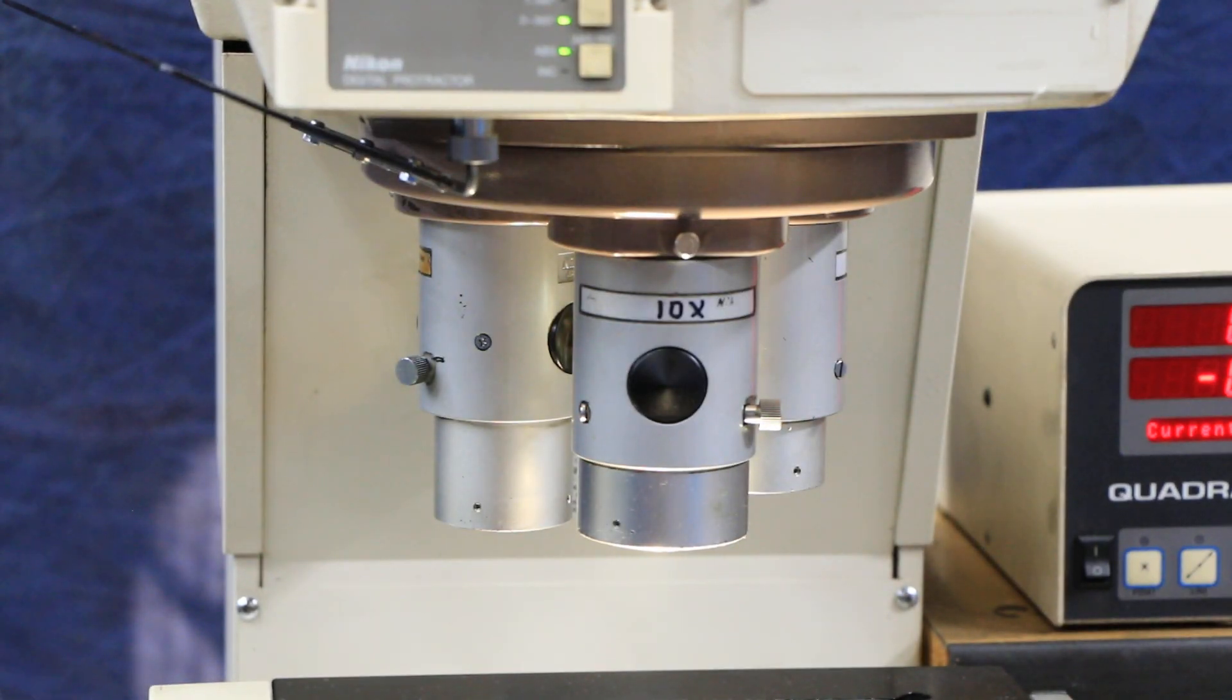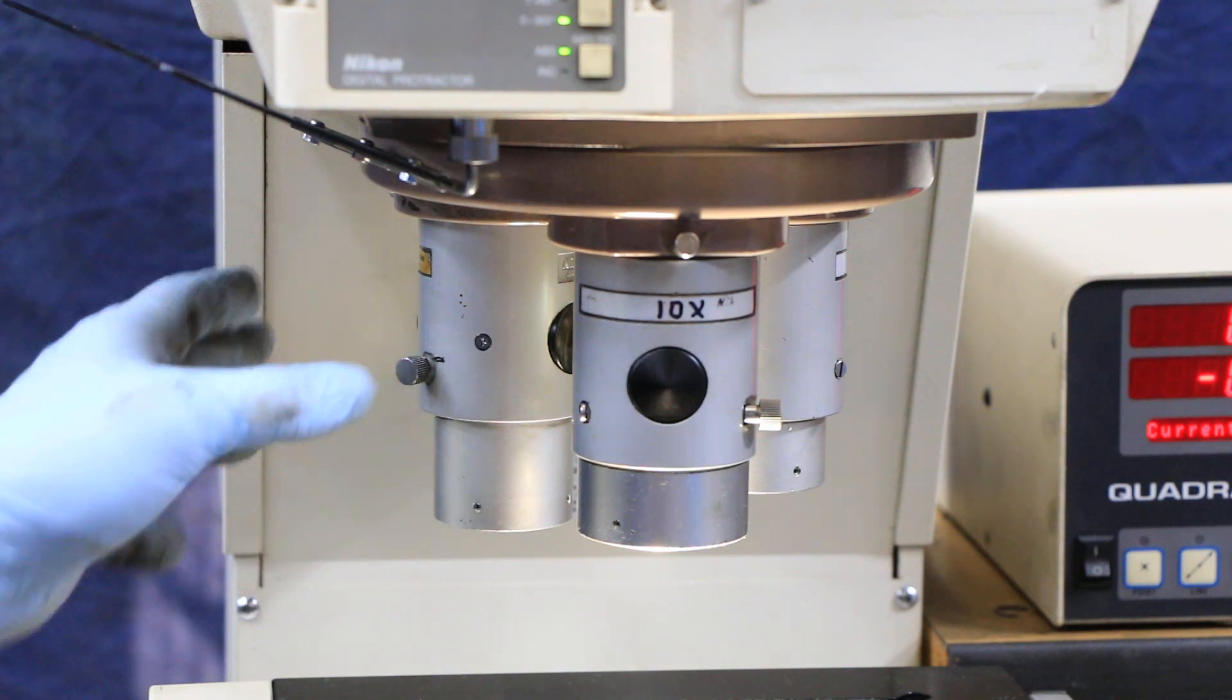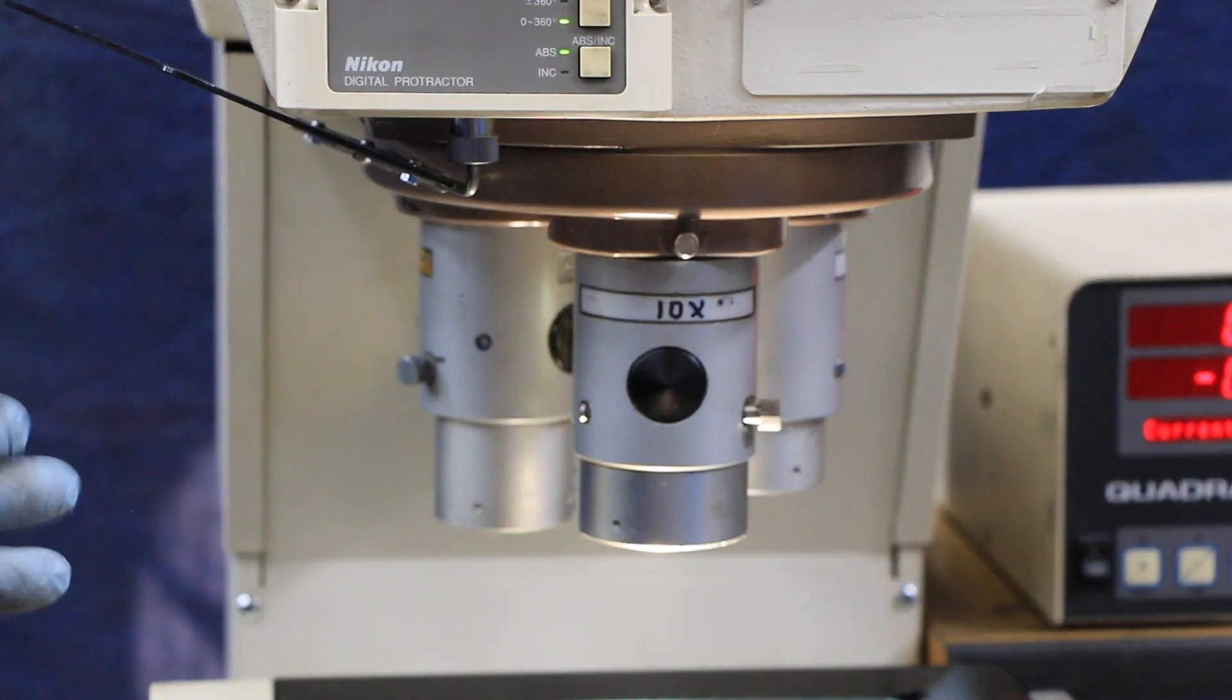So that's 50, a 10, and a 20. And this is a turret. You just grab it and you rotate it around.